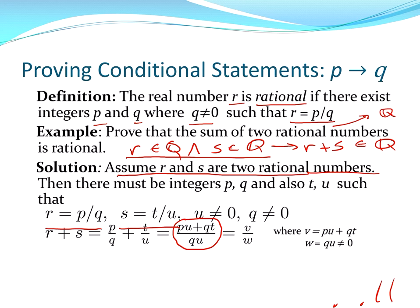And that shows that since v and w are both integers and w non-zero, that is the definition of a rational number. So the sum is rational. All right. So those are two examples of using a direct approach to proving an implication.